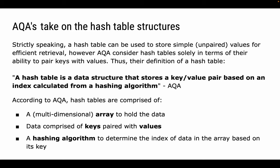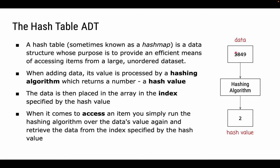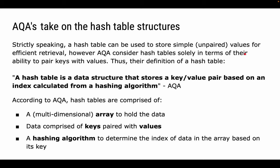Strictly speaking, a hash table can store simple unpaired values for efficient retrieval. But AQA considers hash tables in terms of their ability to pair keys with values, defining a hash table as a data structure that stores a key-value pair based on an index calculated from a hashing algorithm. According to AQA, hash tables are comprised of three things: an array (multidimensional or associative) that holds the data; data comprised of keys paired with values; and a hashing algorithm which determines the index — where to store and retrieve data.